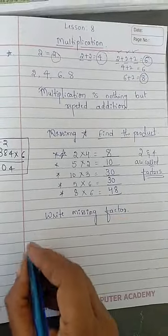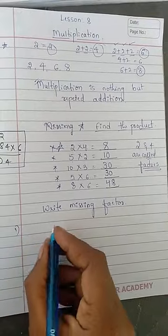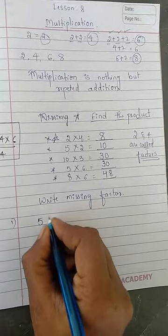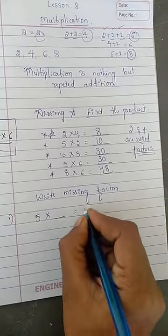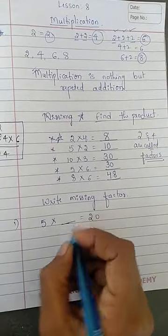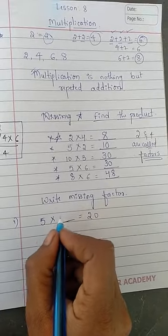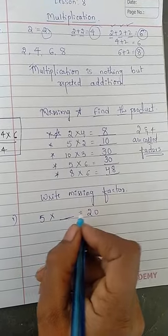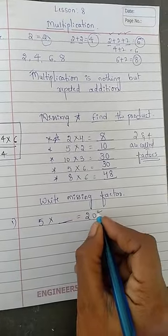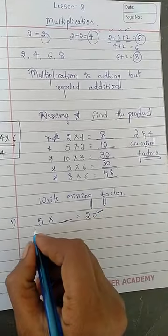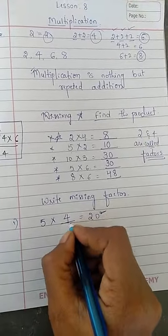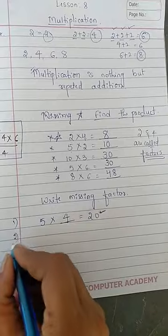Now missing factor they are asking means let us take some problem. 5 into dash is 20. You go on reading the 5 table. 5 ones are 5, 5 twos are 10, 5 threes are 15, 5 fours are 20. Is it 20 here? Yes 20 is there. How many is? 5 fours are 20.